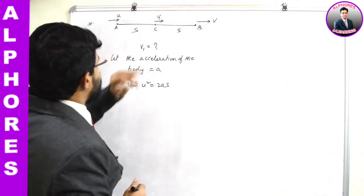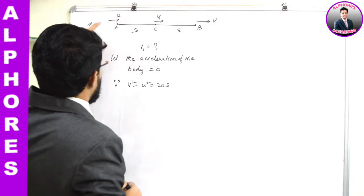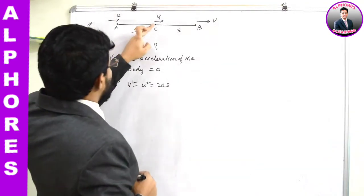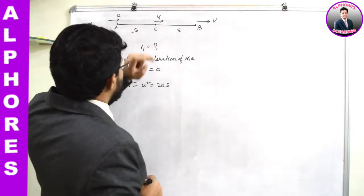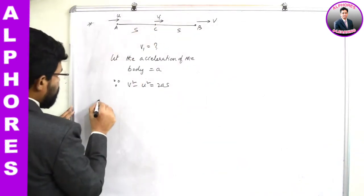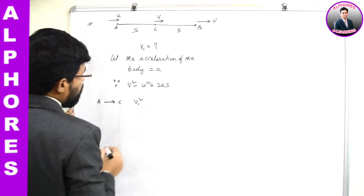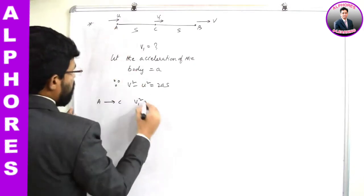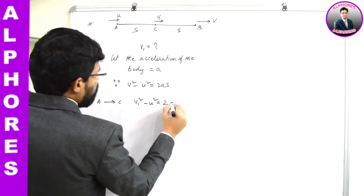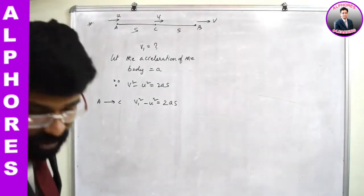I will apply this equation for the journey between points A and C. The initial velocity at point A is u, and the final velocity at point C is v1. So what I can write for A to C: v1² - u² = 2as.